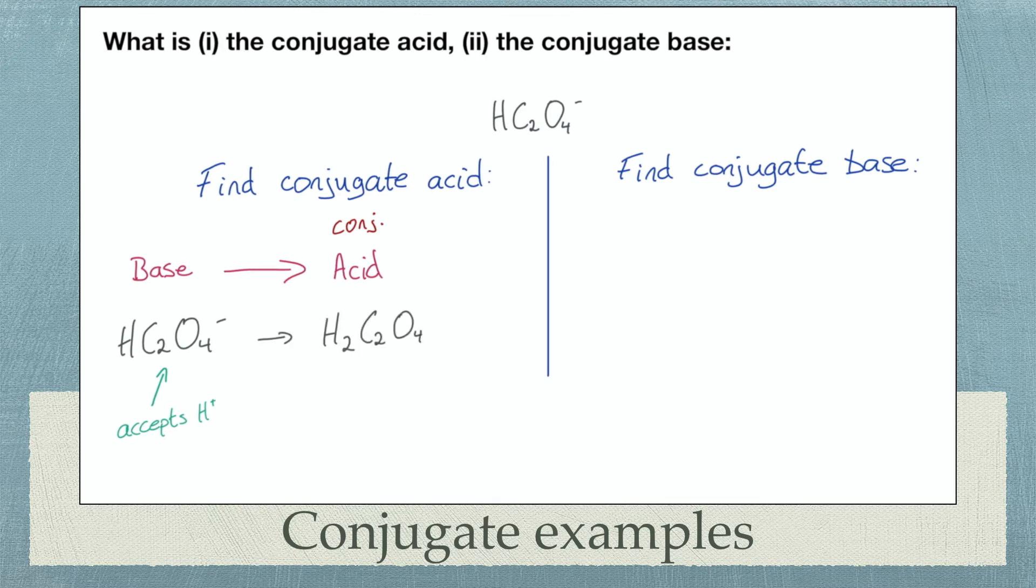Step 2. Remember Bronsted-Lowry definition. A base is a proton acceptor. So we add on a H plus ion. Step 3. Double check the charges. You are adding something positive to a negative complex ion. They cancel out. So we are left with a neutral compound.